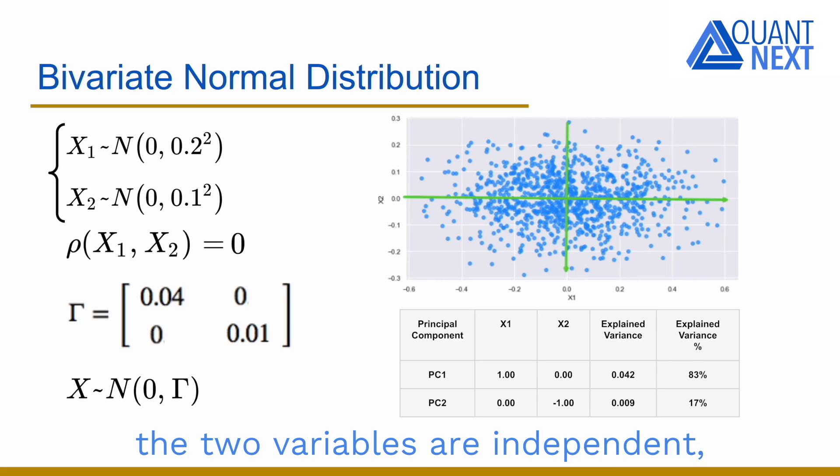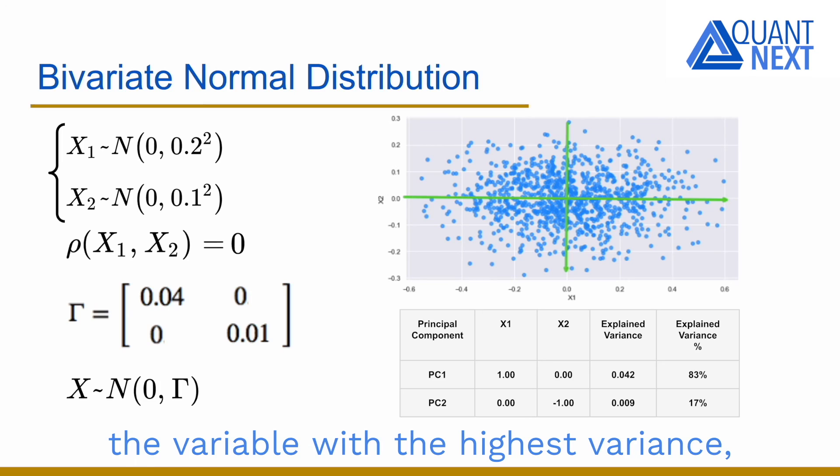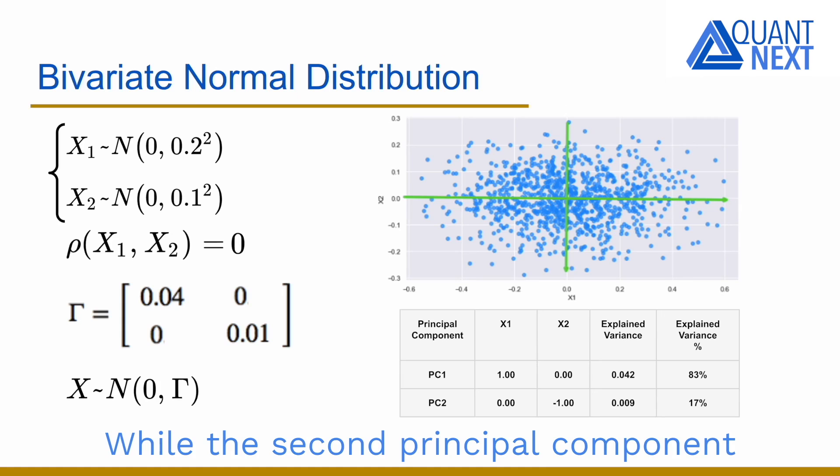And when the two variables are independent, the first principal component points in the direction of the variable with the highest variance, so x1 in our example, while the second principal component points in the direction of the second variable.